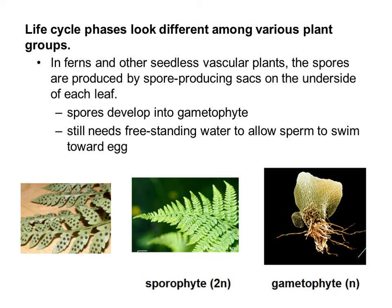In ferns and other seedless vascular plants, spores are produced by spore-producing sacs on the underside of each leaf. These spores develop into the gametophyte. It still needs freestanding water because it's seedless — it needs that water to allow sperm to swim toward the egg. In these pictures of ferns, you can see the sporophyte is the dominant phase, the one the plant lives most of its life in, and the gametophyte is the other phase.